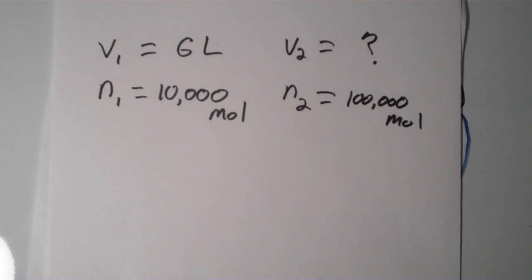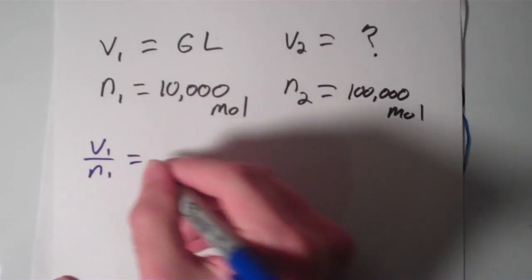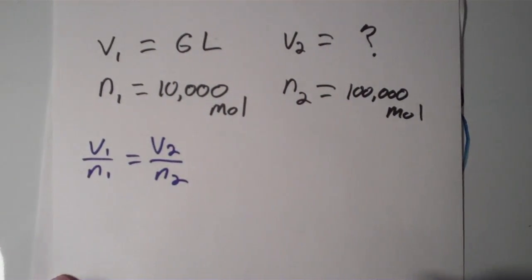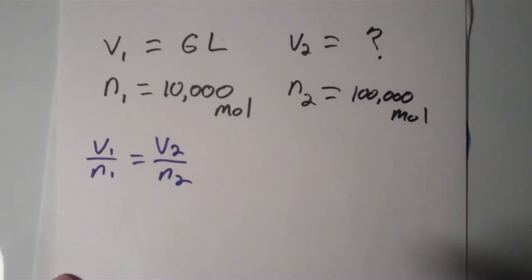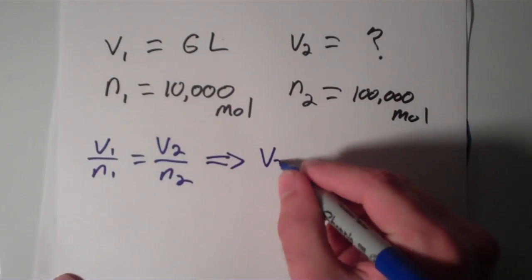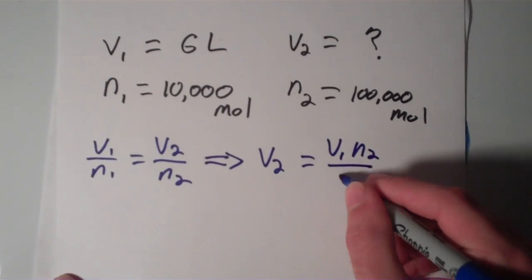So let's write down the relationship again. We have V1 over N1 equals V2 over N2. So, we're looking for V2, so I'm going to multiply both sides of this equation by N2, and that'll lead to V2 equals V1 N2 over N1.